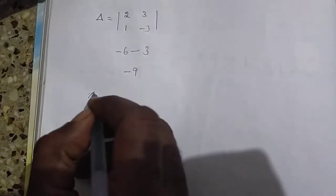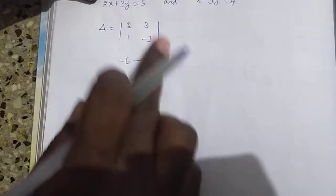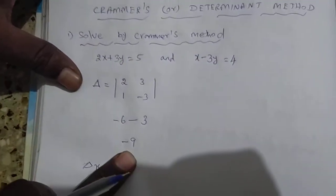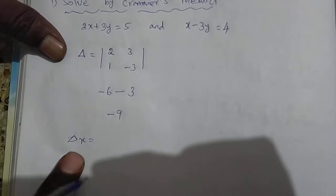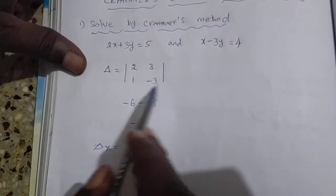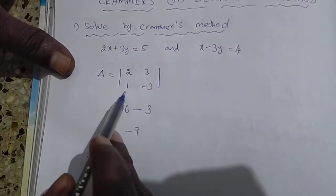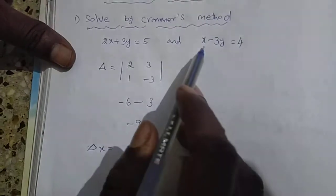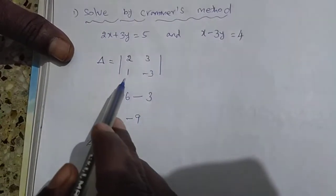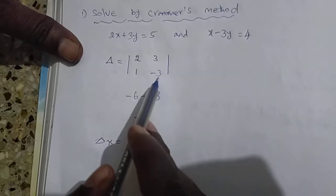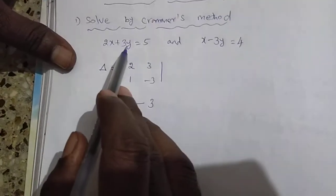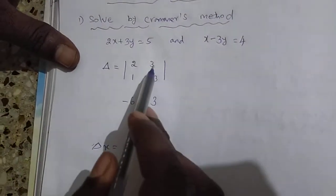Next we have to find delta X. In the delta matrix, the first column is the X term with coefficients 2 and 1, and the second column is the Y term with coefficients 3 and minus 3. To find delta X, you remove the X column and replace it with the constant terms.